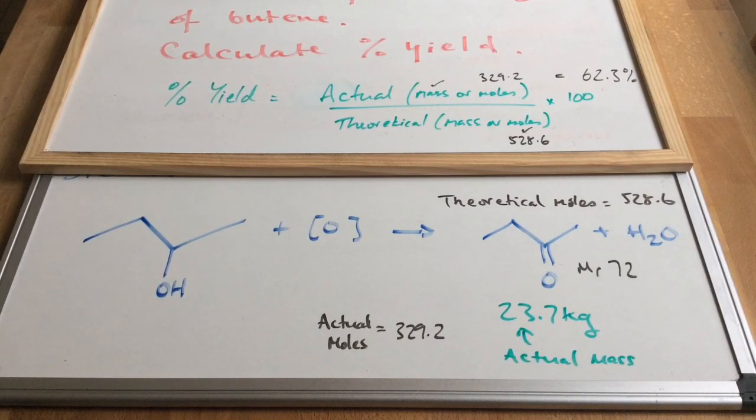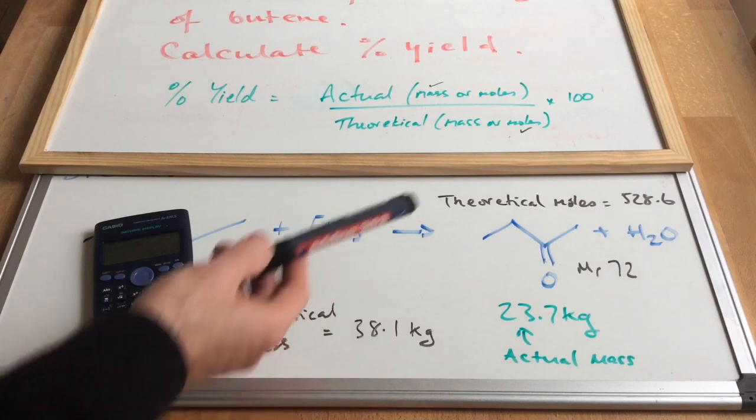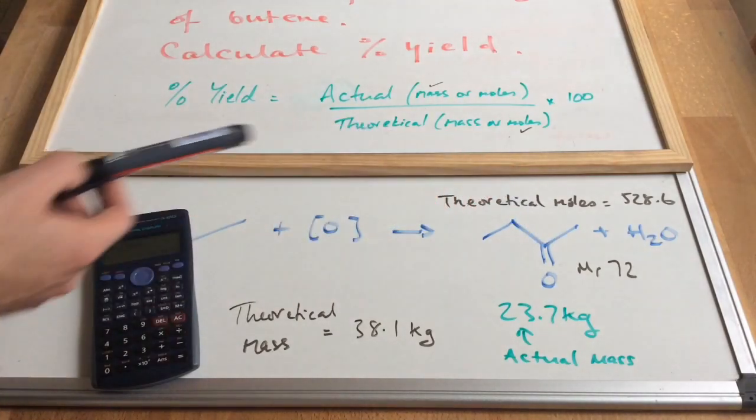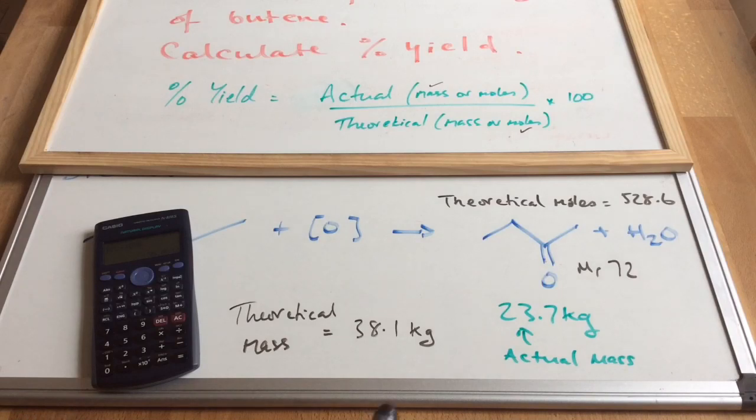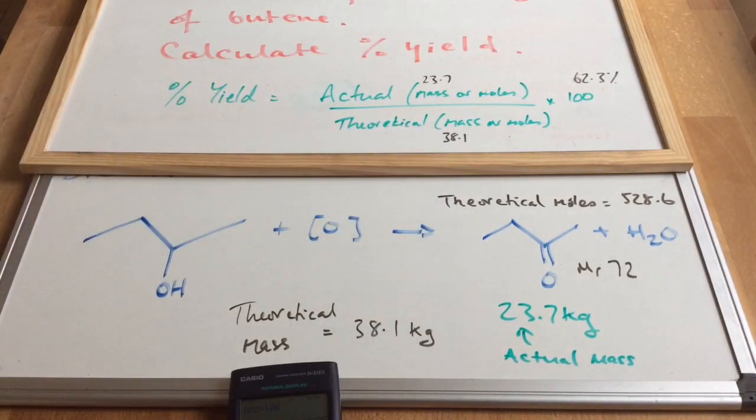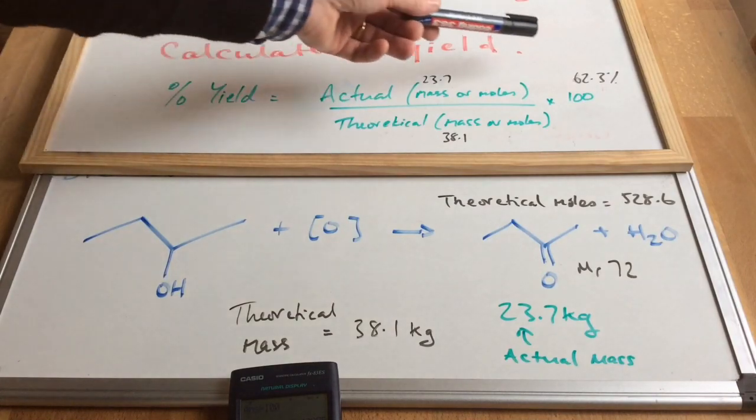So looking at mass now, the theoretical moles would indicate that we should get a theoretical mass of 38.1 kilos. So how have I worked that out? I've taken the theoretical moles 528.6, multiplied by the MR of 72 - mass equals moles times MR - and that gave me an answer in grams which I then divided by a thousand to put it into kilos, and there's the calculator value for you there. And you see on the top board there, feeding those numbers into the calculation we still get the same percentage yield of 62.3 percent.